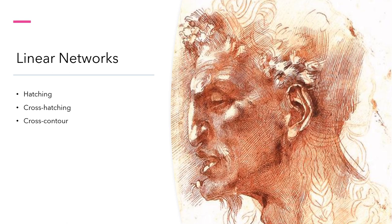Cross-hatching takes it a step further — it utilizes a layering of hatching. Look in the middle of the satyr's cheek and you can see a web, like a grid, of perpendicular hatched lines. The crossing of these lines helps to define a flatness — a plane. Michelangelo is defining a plane on the face.